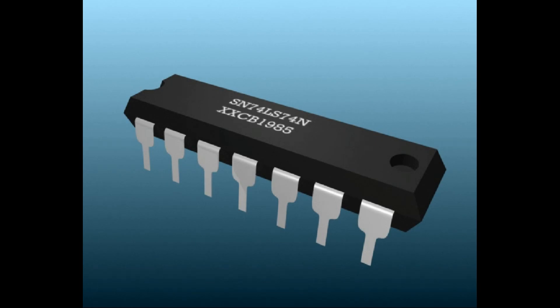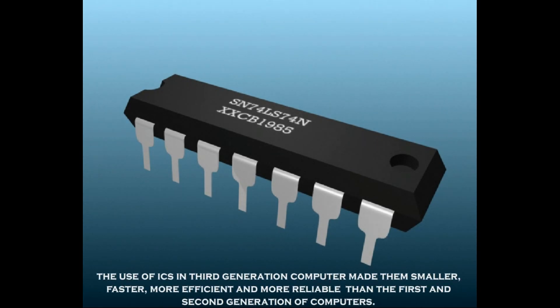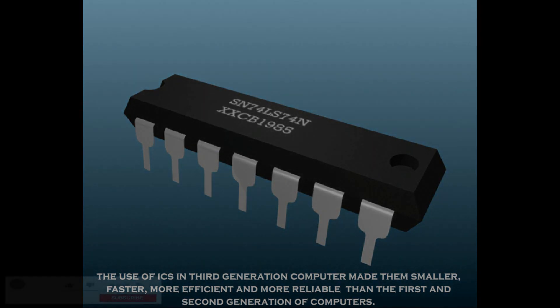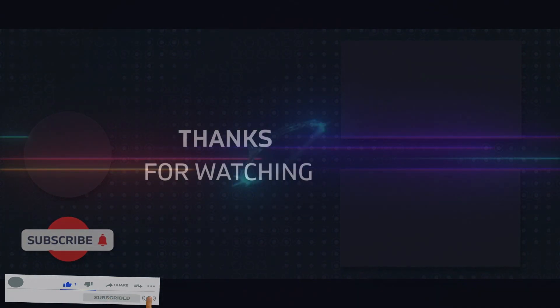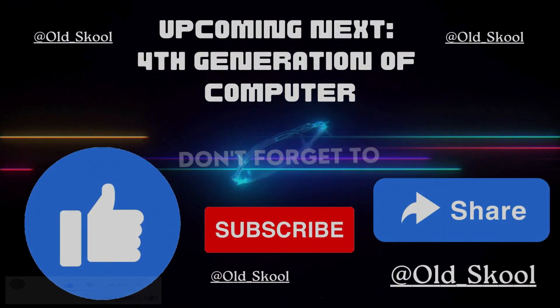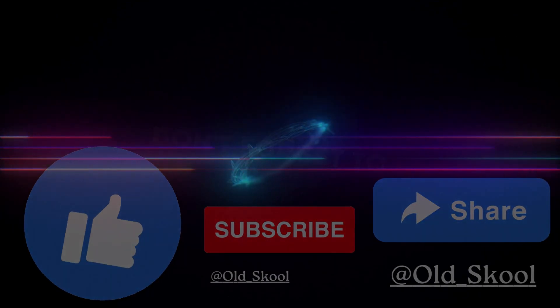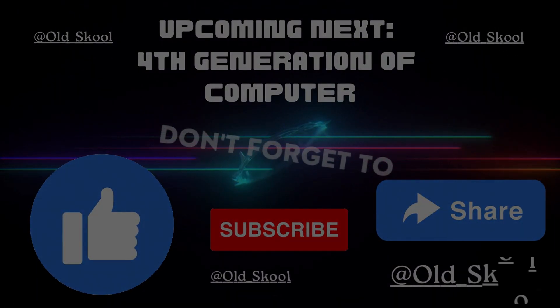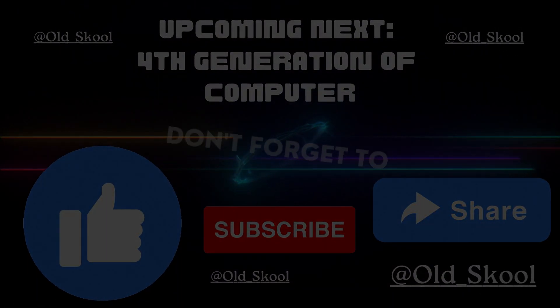The use of ICs in third generation computers made them smaller, faster, more efficient, and more reliable than the first and second generation of computers. That's all for today. Thanks for watching. In the next video we will see about the fourth generation of computers. Till then, stay tuned and please like, share, and subscribe.